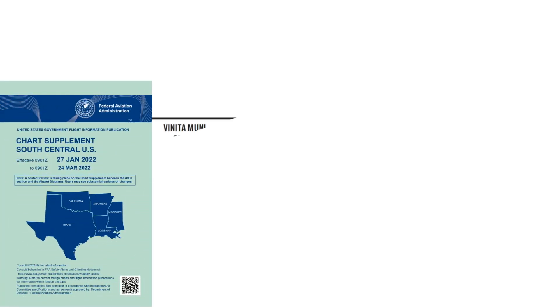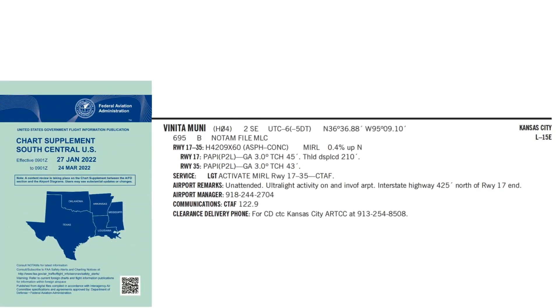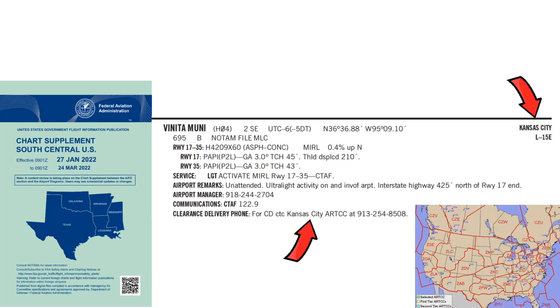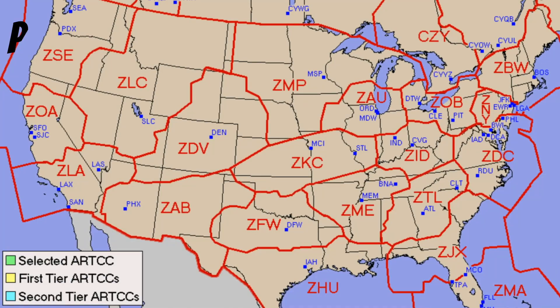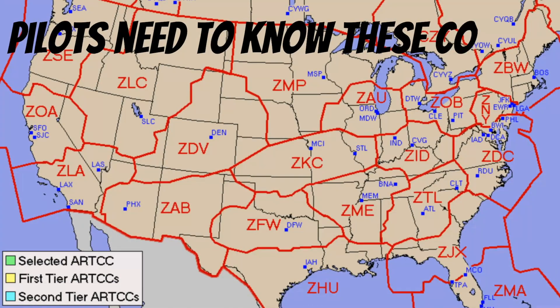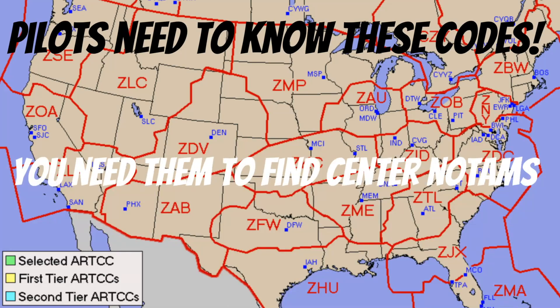In the chart supplement you can see who owns the airspace you're flying in — for example, Vinita Municipal Airport is owned by Kansas City Center — but the ARTCC scroll codes are nowhere to be found there. If someone from the FAA is watching, please put this map at the end of the chart supplement. You need these codes for PIREPs and for center NOTAMs. Until then, I recommend taking a snapshot of the map with your phone, and I'll put a link in the description.